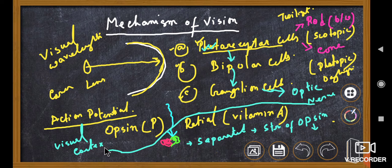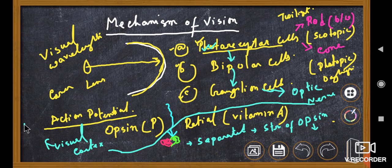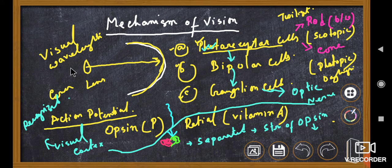The image is recognized based upon previous experiences or memories. The visual cortex analyzes the signals and recognizes the image.